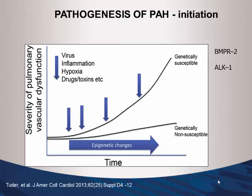Epigenetic changes are increasingly studied in pulmonary hypertension — this means changes in DNA structure by methylation of bases that don't cause a direct mutation but affect transcription. The old thought that you need a BMPR2 mutation for genetic abnormality is valid, but it doesn't explain most cases. For example, only 6% of cirrhotic patients with portal hypertension develop pulmonary hypertension — why not everyone with the same stimulus?